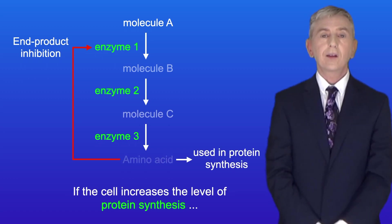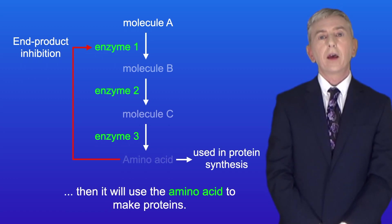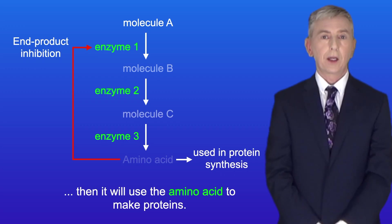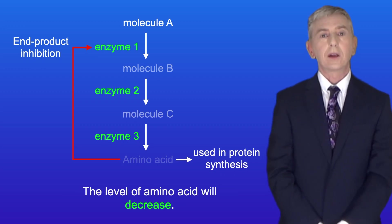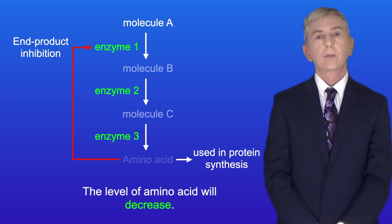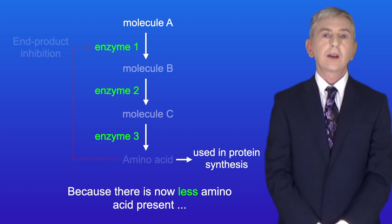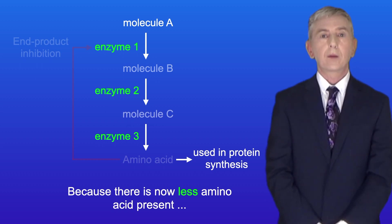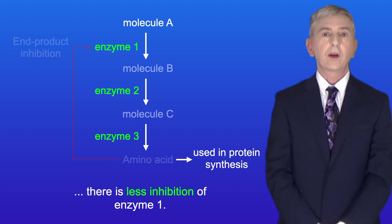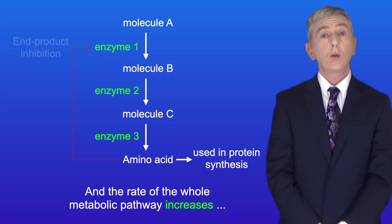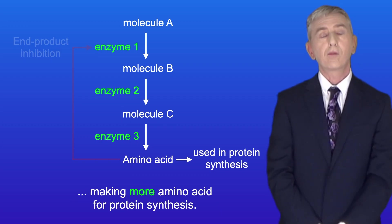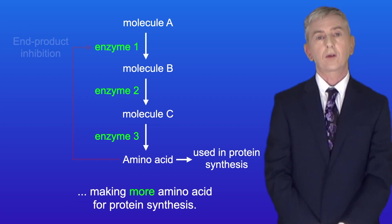If the cell increases the level of protein synthesis, then it will use the amino acid to make proteins, and the level of amino acid will decrease. Because there is now less amino acid present, there is less inhibition of enzyme 1, and the rate of the whole metabolic pathway increases, making more amino acid for protein synthesis.